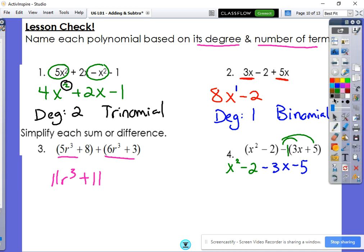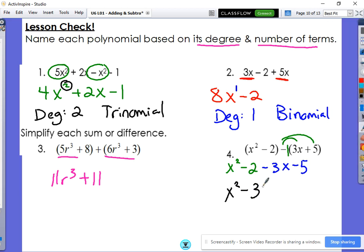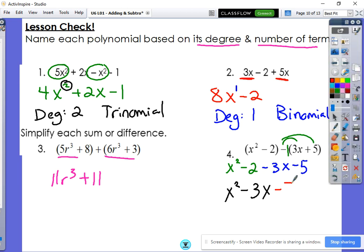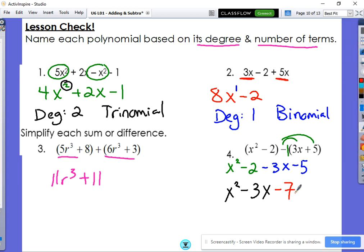So now we can combine like terms. The x squared doesn't have anybody. The negative 3x doesn't have anybody. But the negative 2 and the negative 5 combine to make negative 7. So there you go. There's a good little lesson check.